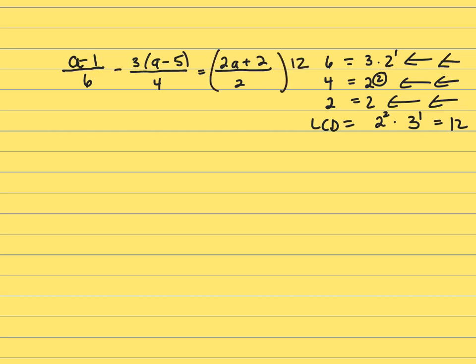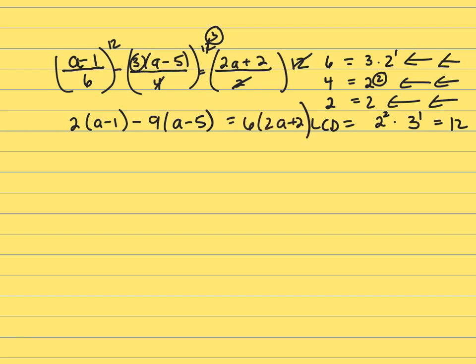You're going to multiply every term on both sides by 12 to clear your fractions. That's going to be 6 into 12 two times. That's 2 times A minus 1 minus 4 into 12 three times. 3 times 3 is 9. 9 times A minus 5 equals 12 into 2 and 12. That's going to leave 6 times 2A plus 2. Notice that I only got rid of my denominators. I did not get rid of my grouping symbols. Now I'll get rid of my grouping symbols.